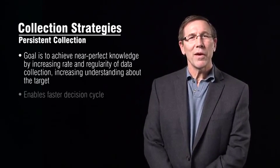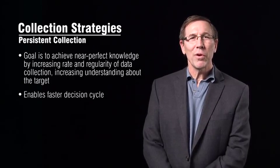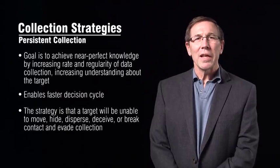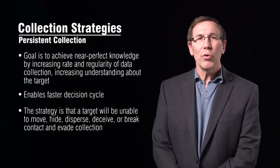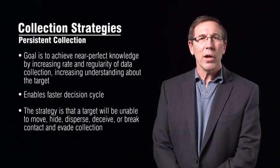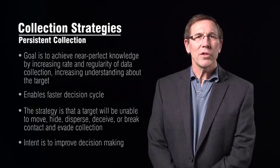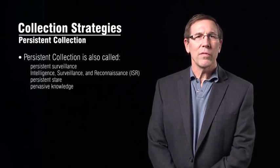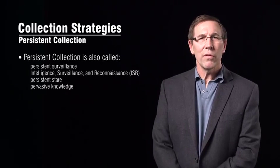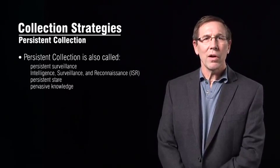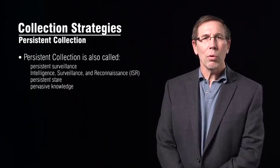This enables a faster decision cycle with more frequent and detailed data. The collection strategy is that a target will be unable to move, hide, disperse, deceive, or break contact. The intent is to improve decision-making. In different domains, persistent collection is called persistent surveillance, intelligence, surveillance, and reconnaissance — or ISR — persistent stare, or pervasive knowledge.